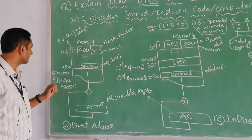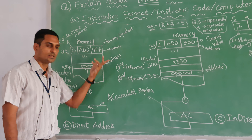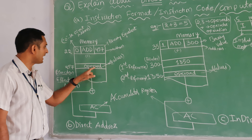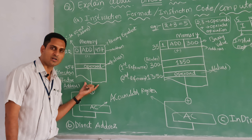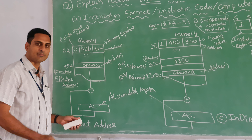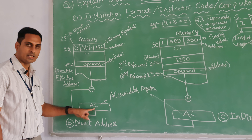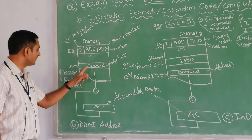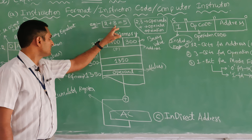You can put any number — no need to use the textbook number while writing an exam. That address 457 directly points to the operand value. In direct address, the address field directly shows the operand — the actual value. That value will be added and stored in the accumulator register, which I explained in my previous video. That is direct address.